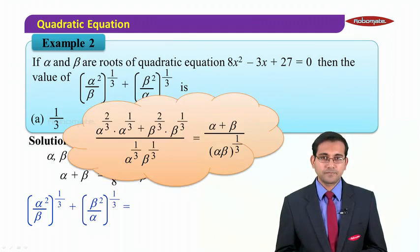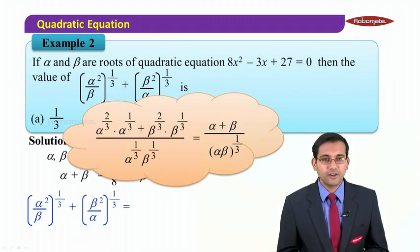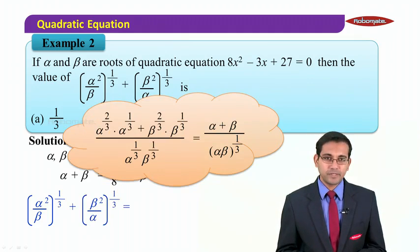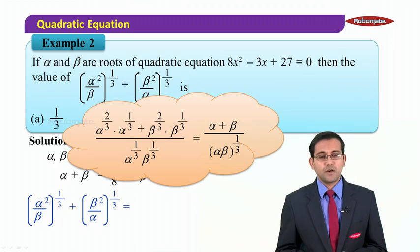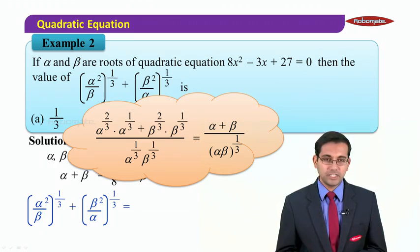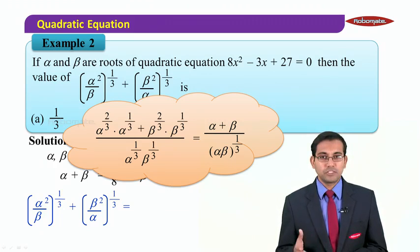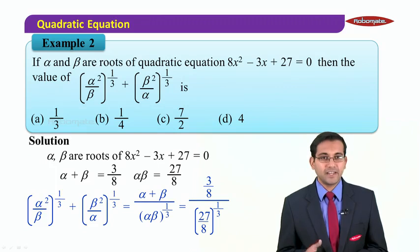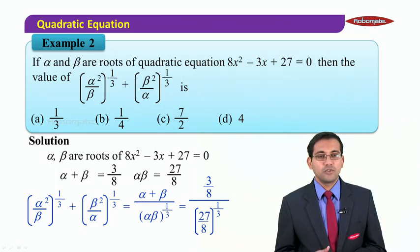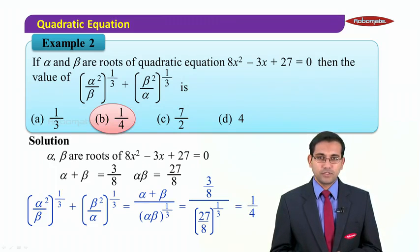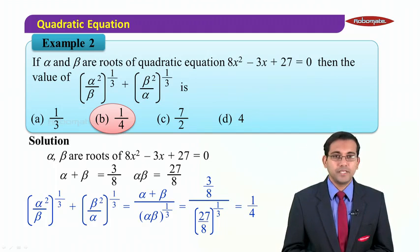Cross-multiplying and simplifying, the expression reduces to (α+β) / ∛(αβ). Substituting α+β = 3/8 and the cube root of αβ = 27/8 in the denominator, this simplifies to the very simple value of 1/4. So the correct option is option B.